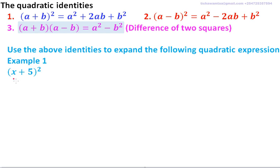For example, to expand this one, we need to use this identity. So we have three: that is one, this is the second identity, and this is the third identity. So we are going to use the first identity to expand this.